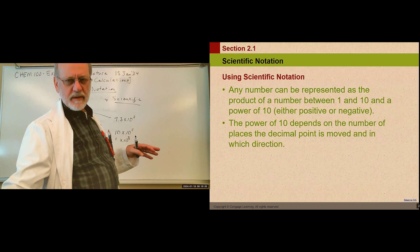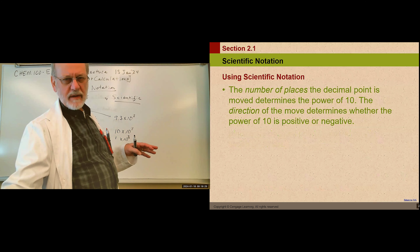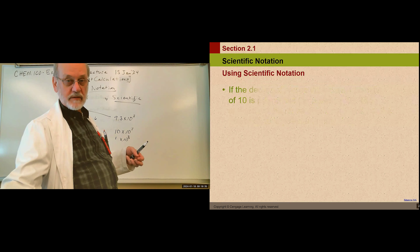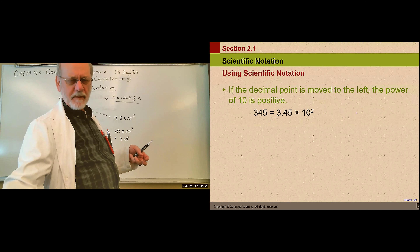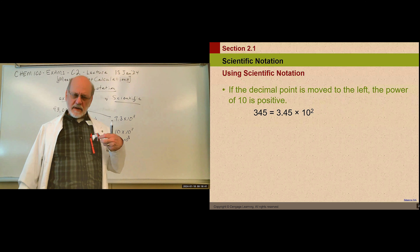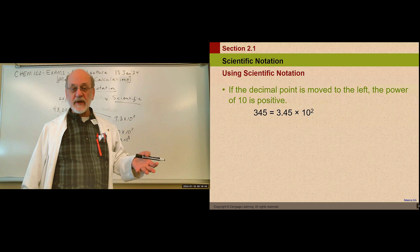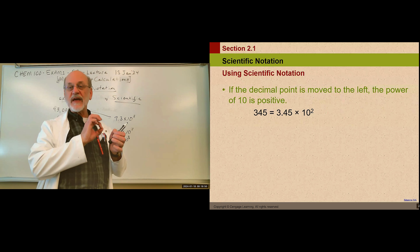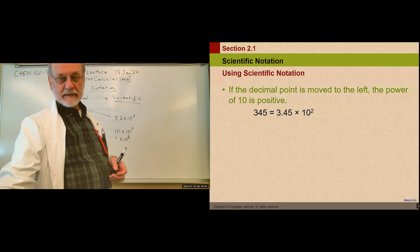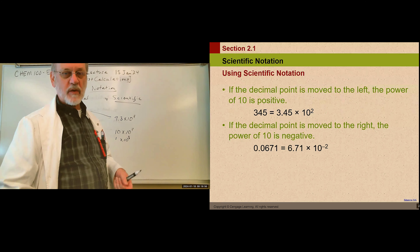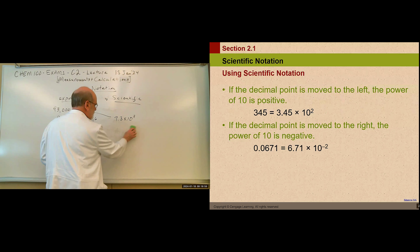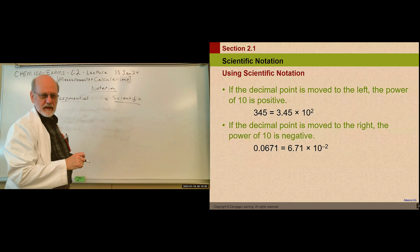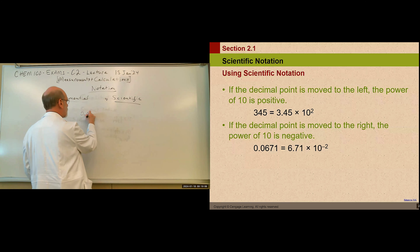The number of places you move the decimal is the number of powers of ten. For a number greater than one, we move the decimal to the left — for example, moving it two places gives an exponent of positive two. For a small number like 0.0671, we're taking a small number and making the coefficient bigger, so the power of 10 goes negative.